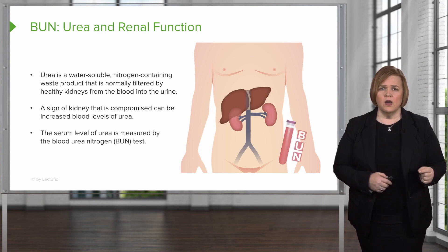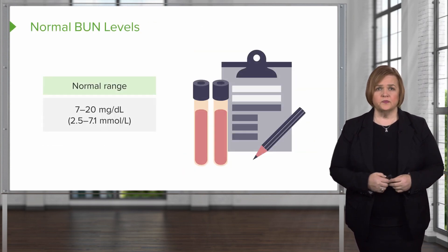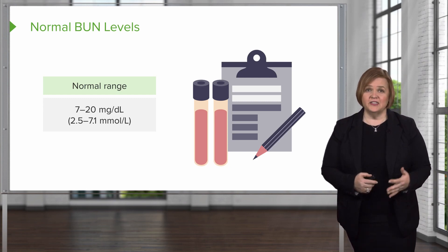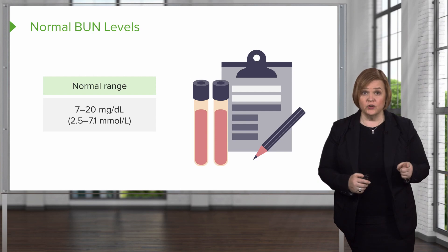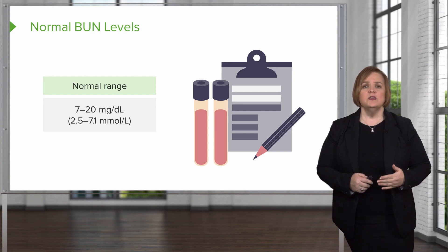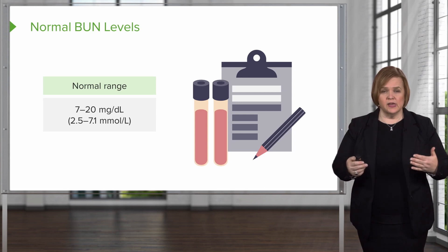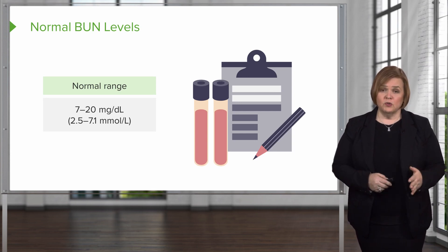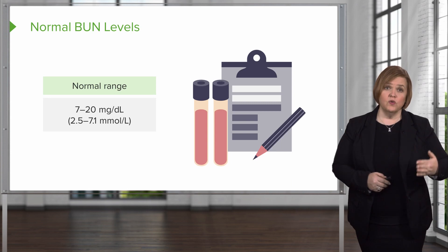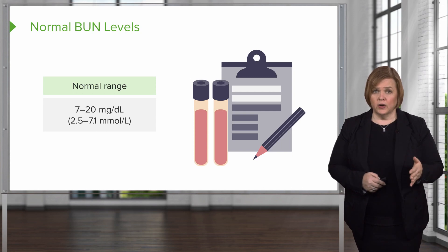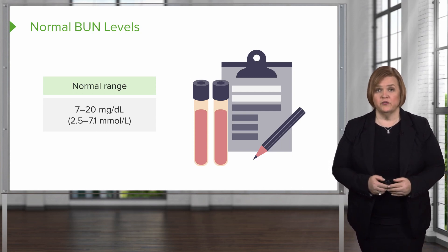We measure this by doing a blood test — a blood urea nitrogen test. These are the normal levels. When you're actually practicing, these values will be printed right alongside your patient's values because every lab is a little different. The only way to remember normal values is to keep looking at them over and over. Be sure to quiz yourself on this because these are important parts of exam questions and your professional practice.